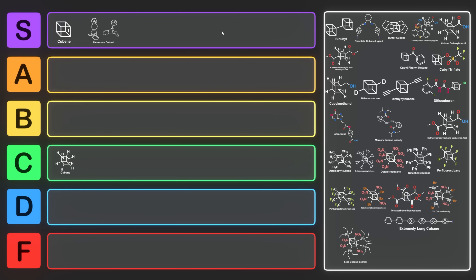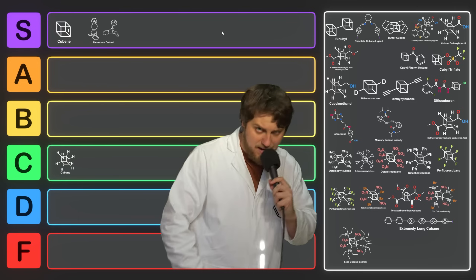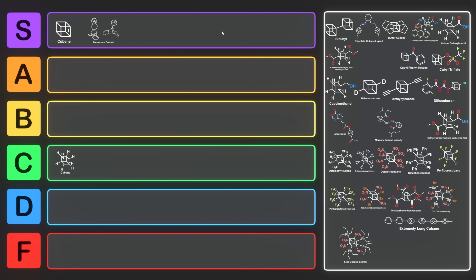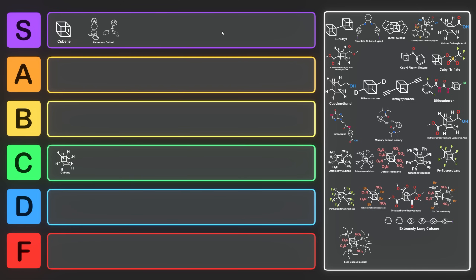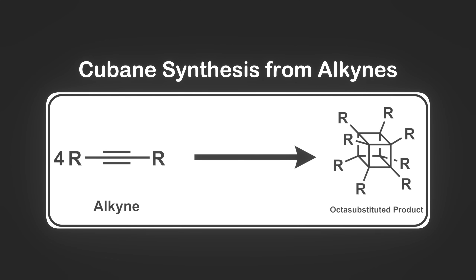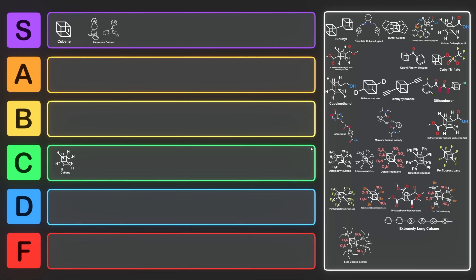We didn't really talk about how cubanes are made. Tom's tried to make cubane on his channel — I encourage you to check out his videos. One way he wants to make it is from cyclopentanone, converted over several steps. While that's one way, there are a lot of other ways to make cubane derivatives. One method involves combining four equivalents of the same alkyne to get an octa-substituted product. This works for certain cubane derivatives — one example is octamethylcubane, which is pretty cool but a little simple.